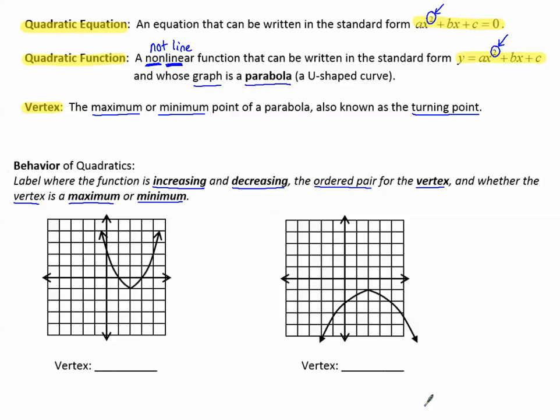Label where the function is increasing and decreasing, the ordered pair for the vertex, and whether the vertex is a maximum or minimum. So reading the graph like we do from left to right, first notice that the graph is going down until it gets to this point. So this section of the graph is decreasing. The next section of the graph is going up. This section of the graph is increasing.